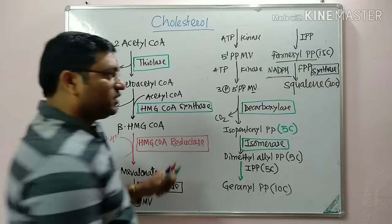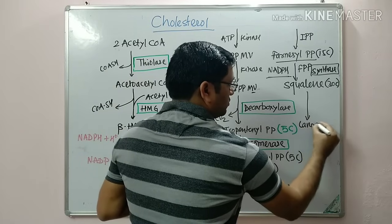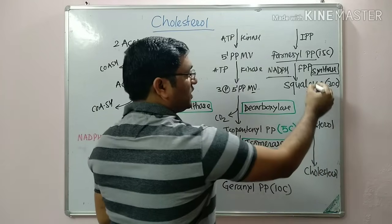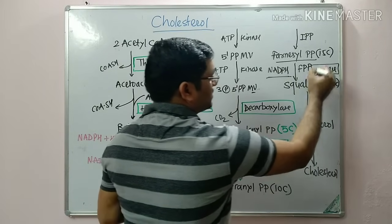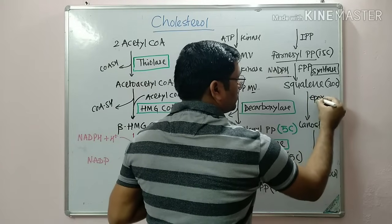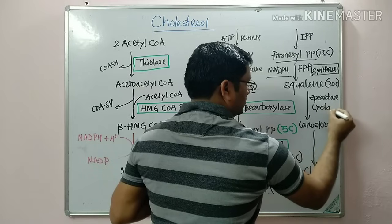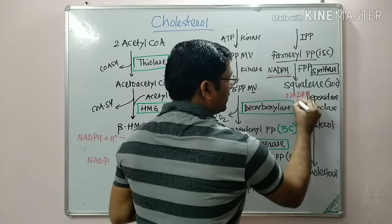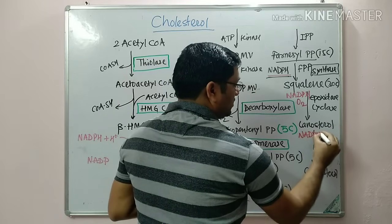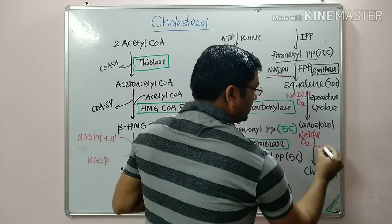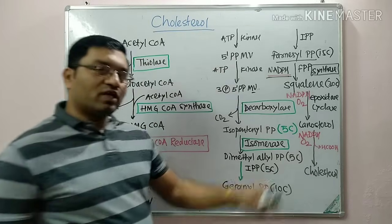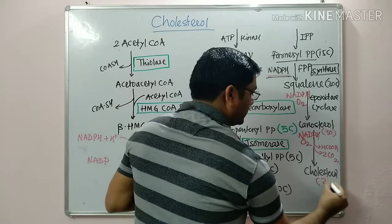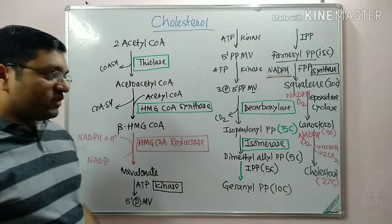This 30-carbon squalene is converted into lanosterol, which is then converted into cholesterol. The reactions of squalene synthase, epoxidase, and cyclase all require NADPH and O₂. There is release of a 1-carbon unit and 2 molecules of carbon dioxide, converting the 30-carbon compound into the 27-carbon compound cholesterol. These are the five steps in cholesterol synthesis.